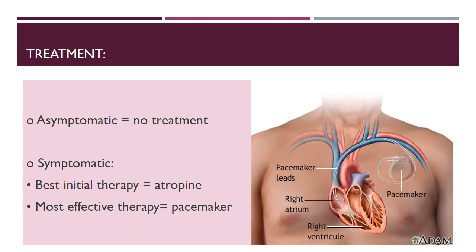For symptomatic patients, the best initial therapy is atropine. It causes an increase in heart rate by blocking the effect of the vagus nerve on the heart. However, the most effective therapy is a pacemaker. A pacemaker monitors heart rhythm and if it detects any irregularity, it sends electrical impulses to the heart to improve pacing and induce a normal rhythm.